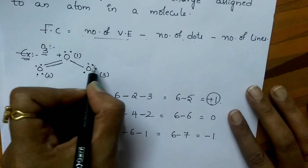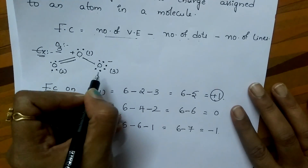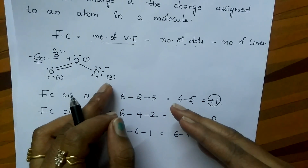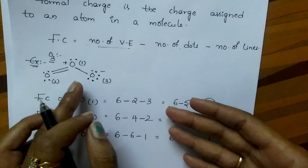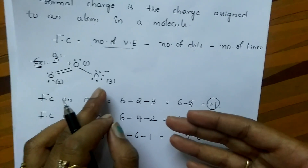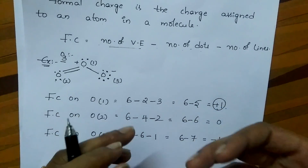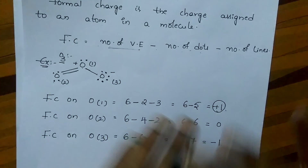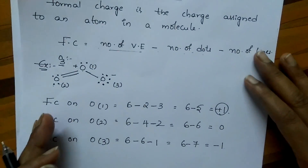By using this formal charge we can say which Lewis structure is the best structure. The structure which is having the least formal charge or zero formal charge is the best Lewis dot structure. Thank you.